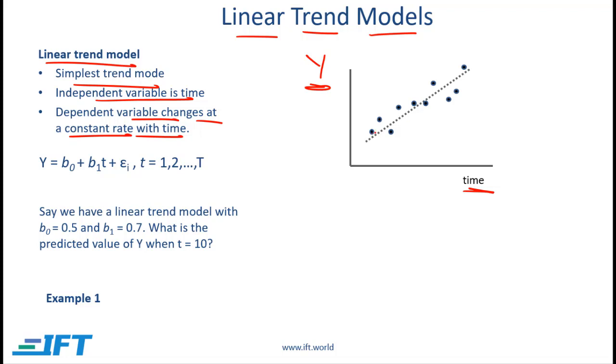So we regress y against time and we get this line. This is linear regression, so we have a straight line and the form of the line is shown over here. y is equal to b₀, b₀ is the intercept term, so the y-axis intercept is b₀ and then b₁ is the slope and then t is the independent variable.